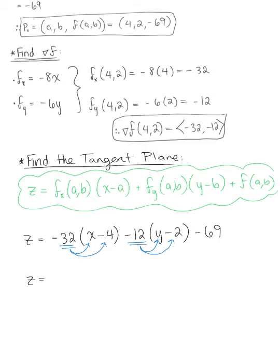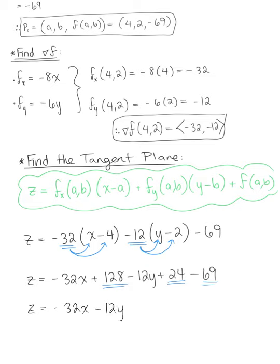We have z equals negative 32x plus 128 minus 12y plus 24 minus 69. Adding up all our like terms, we get z equals minus 32x minus 12y, and 128 plus 24 minus 69 leaves us with plus 83.